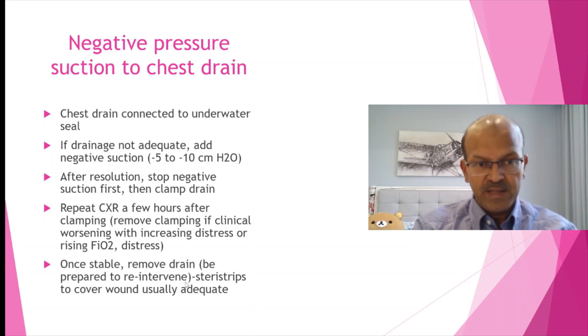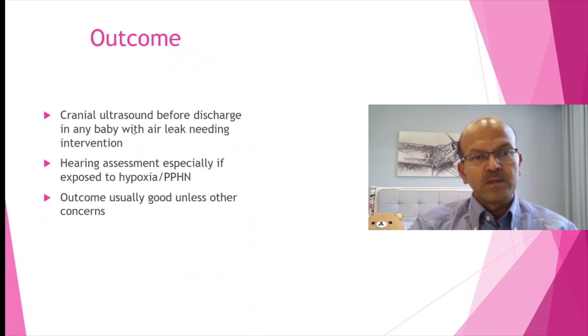Just to recap: the chest drain is connected to the underwater seal. Consider adding negative suction pressure of minus 5 to minus 10 centimeter of water. First stop the negative suction, then clamp the drain, and repeat the chest x-ray before you remove. If there is worsening clinically, even before you do the x-ray, you don't need an x-ray—just reopen the drain and wait. How long you wait depends on the case. Some cases do get into a bronchopleural fistula stage where you need to be really patient and educate the family that it is going to take time to heal. Once it's removed, you don't really need a stitch—just steri-strips to cover the small wound should be adequate. Remember that pneumothorax causes hypotension in babies, so a cranial ultrasound before discharge, even if it's a term or near term baby, is better in any baby needing intervention. You don't need that in spontaneous pneumothorax or asymptomatic or just needs flow. Hearing assessment is needed, especially if the baby had desaturation or there was a PPHN-like setup. The outcome is usually good unless there are other concerns.